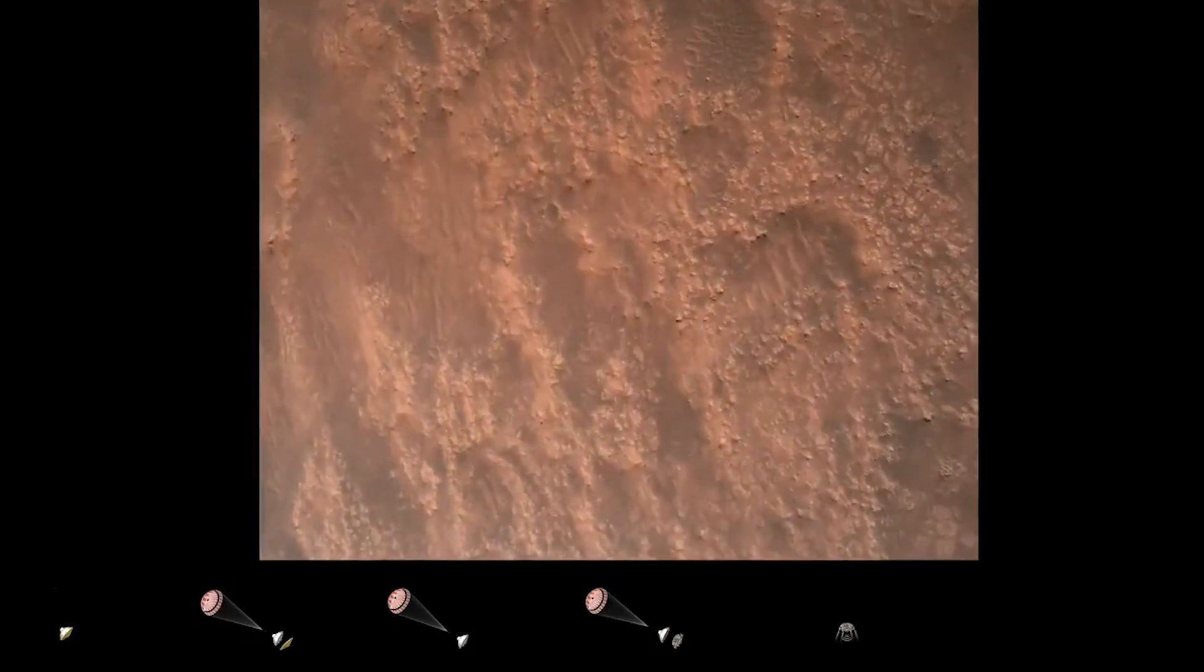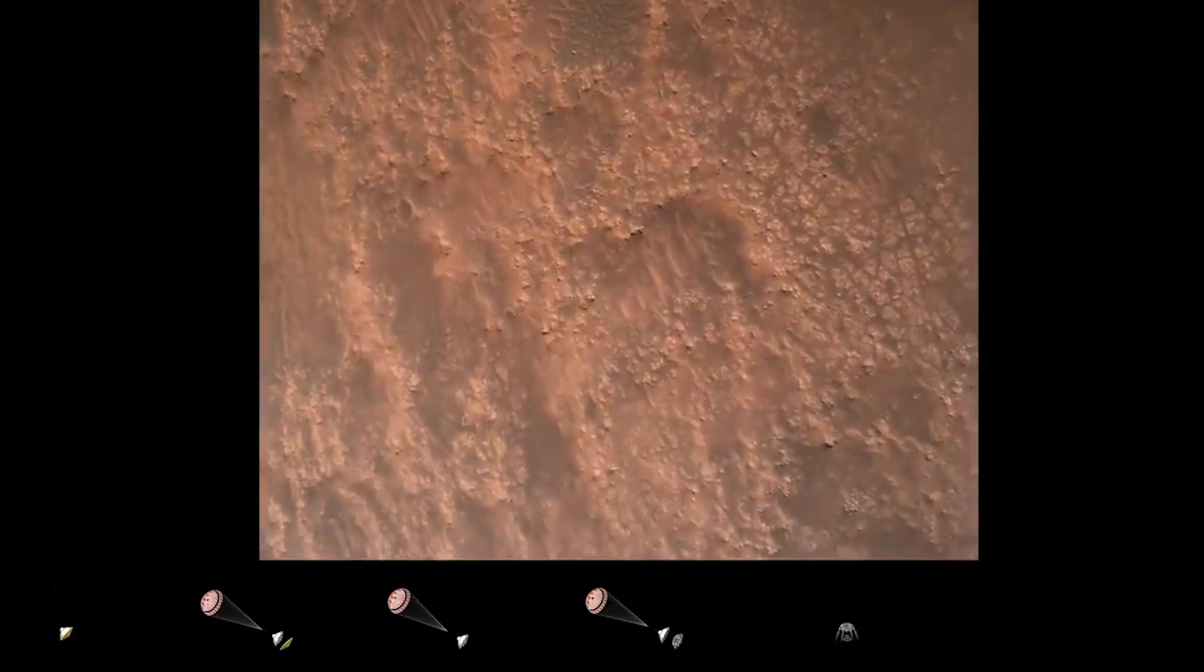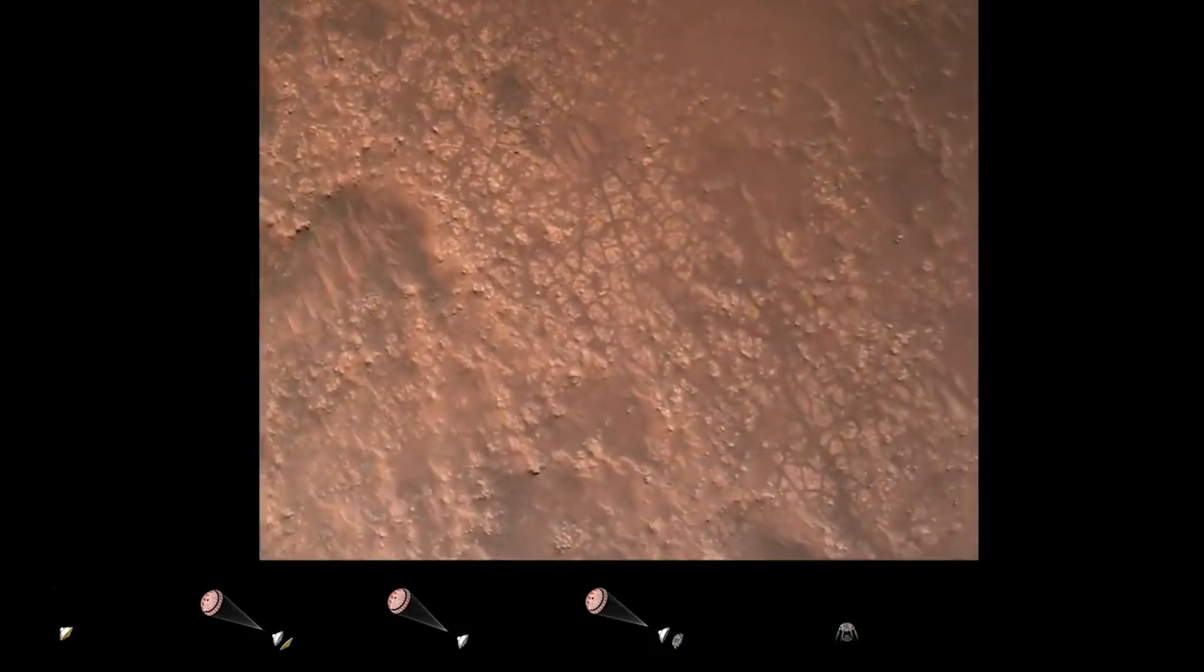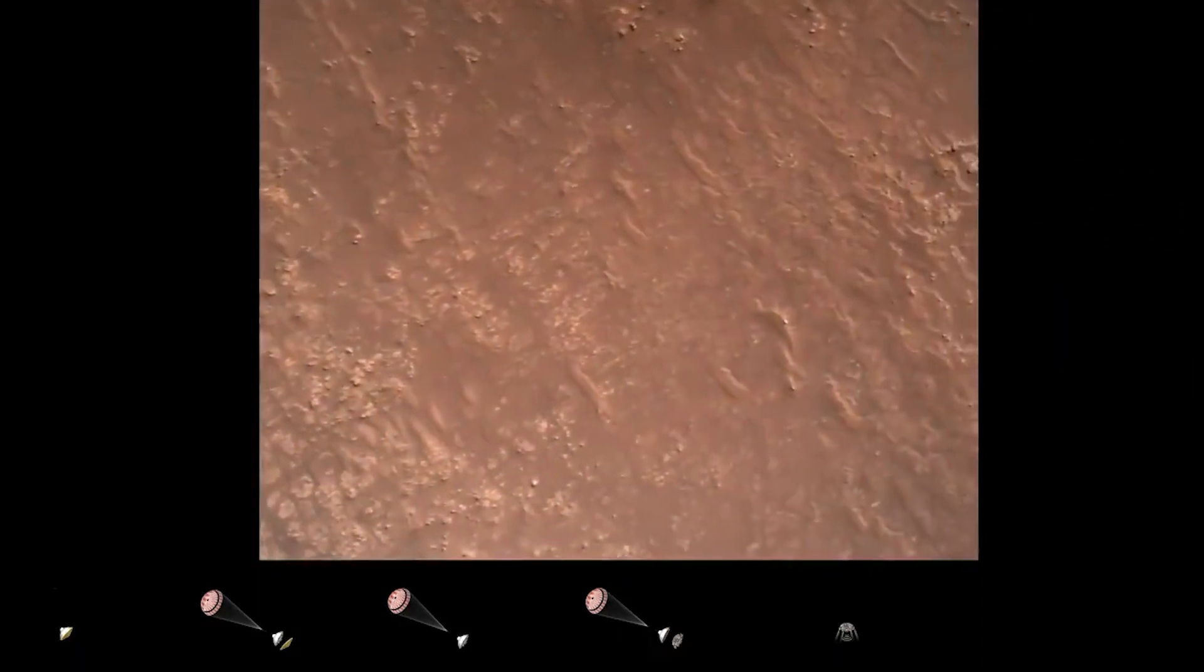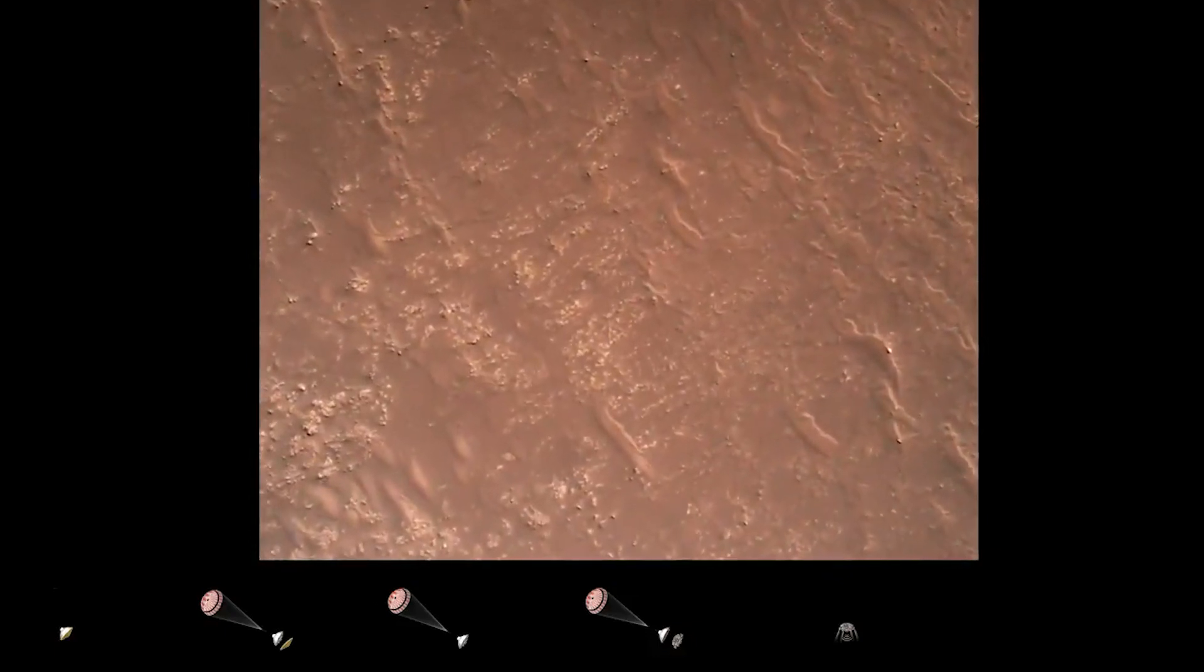We have completed our terrain relative navigation. Current speed is about 30 meters per second at an altitude of about 300 meters off the surface of Mars.